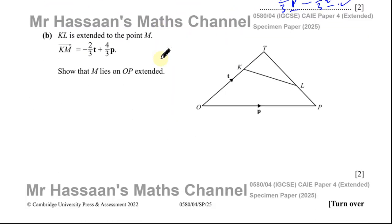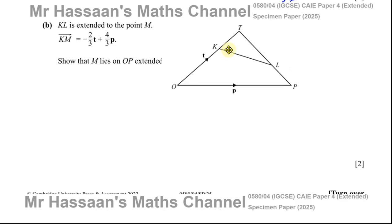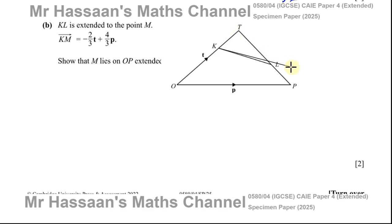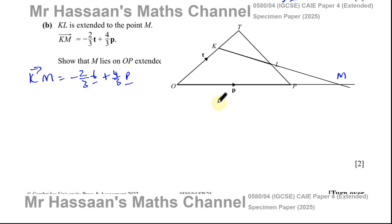Now for part B: it says KL is extended to the point M. So I draw the line and extend it further to point M. It says show that M lies on OP extended. They gave us the vector from K to M, which is equal to minus two thirds t plus four thirds p. We have to show that M lies on the extension of the line OP.